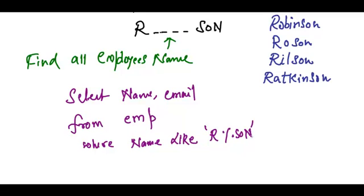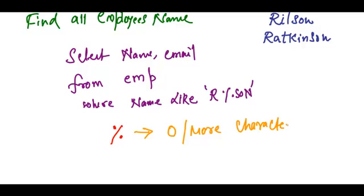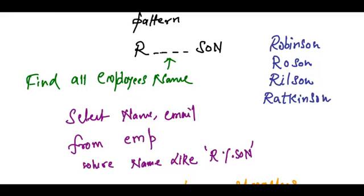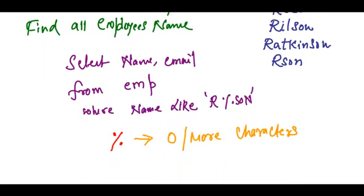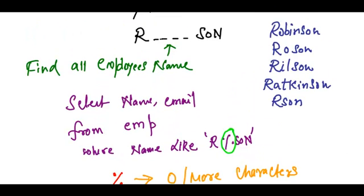A percent sign matches zero or more characters. So we can even have a value like Rosen — in that case we have zero characters between R and 'son'. This is the special character I am using to find all people whose names start with R and end with 'son'.